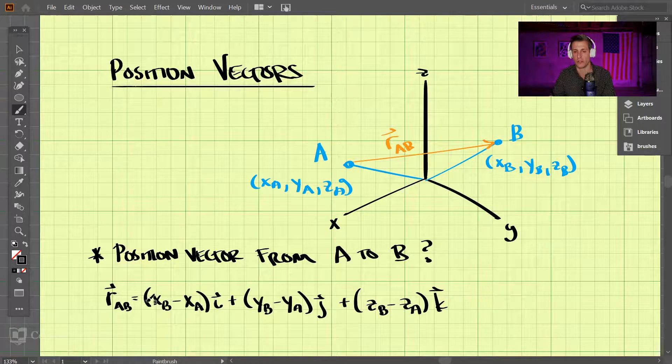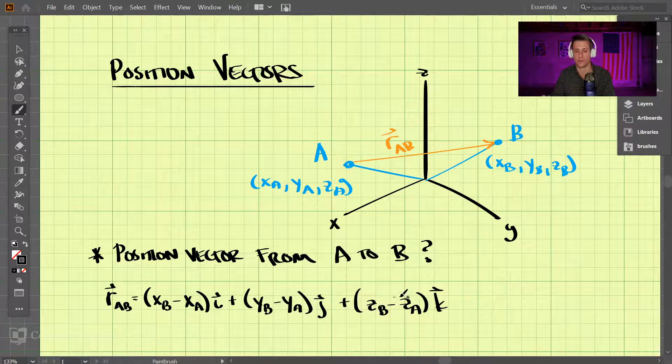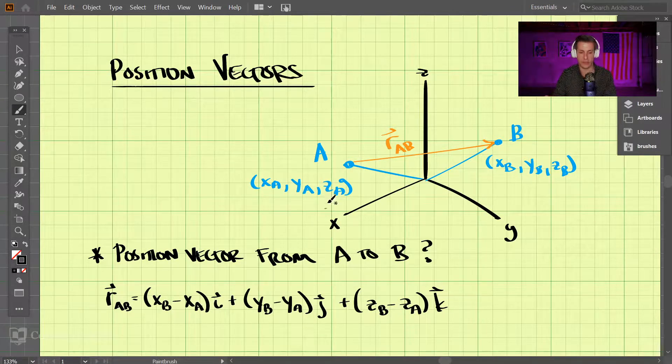All right, so we're just taking this endpoint and subtracting the initial point for each of the respective components here. And that would represent the position vector from A to B.